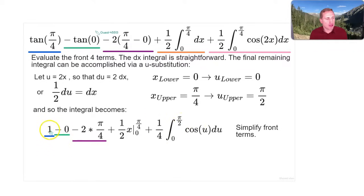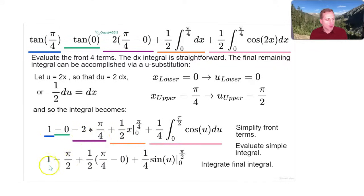And u is 2x, and then now we have du in here, because dx became 1/2 du. And the new bounds are 0 to π/2. Now if we simplify these front terms, this is 1, and this is going to be -π/2. So 1 - π/2. Then we plug in the bounds here. It's π/4 - 0. So 1/2 times π/4, that's going to give us π/8 in a moment. The integration of cos(u) du is just sin(u). And then the bounds are 0 to π/2.